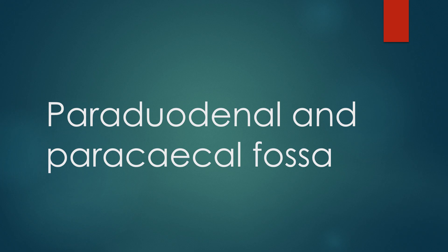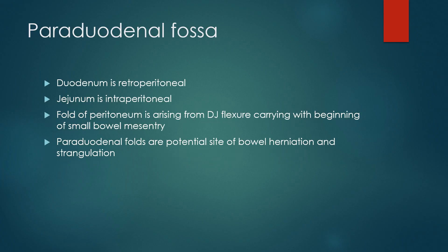Bismillahirrahmanirrahim. Paraduodenal and paracecal fossa — what are they? Let's start with the paraduodenal fossa. Para means around — around the duodenum. Fossa are shallow spaces around the peritoneum.